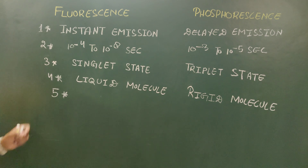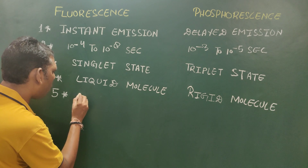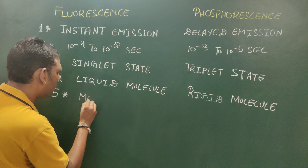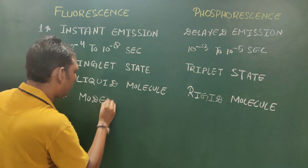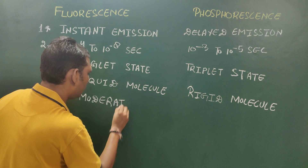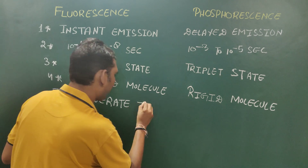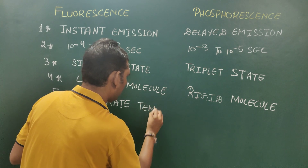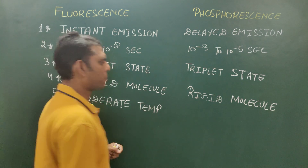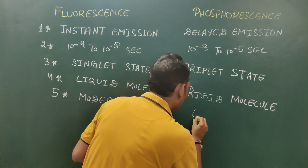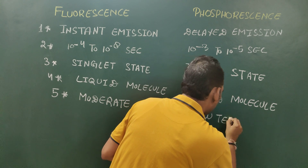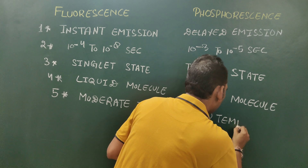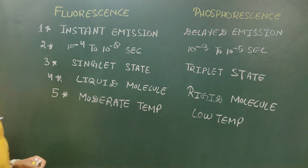The fifth difference: fluorescence generally takes place at moderate temperature, whereas phosphorescence generally takes place at low temperature.